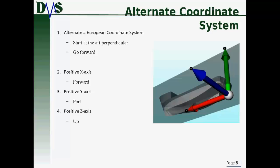An alternative that you can also use is a European coordinate system. That's where you start at the aft perpendicular of your ship and then you go forward. And again, in this case, positive x points forward instead of aft. Positive y points to port. And again, positive z points up.